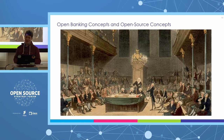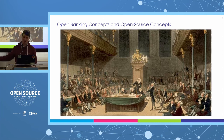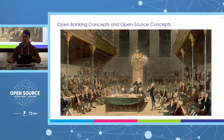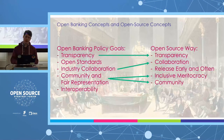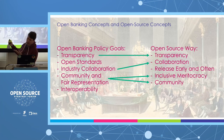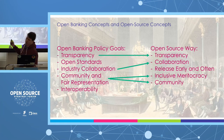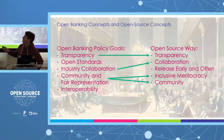The argument is that open banking should follow open source's principles of common good to achieve its policy objectives as well as the bank's objectives. Things like transparency, collaboration, releasing early and often — which could be a proxy for pragmatism — and inclusive meritocracy and community align with a lot of what you see in different open banking policy goals released by different governments. The Canadian government's goals are very similar to what the UK and Australia put out: transparency, open standards, industry collaboration, fair representation, community, and interoperability.